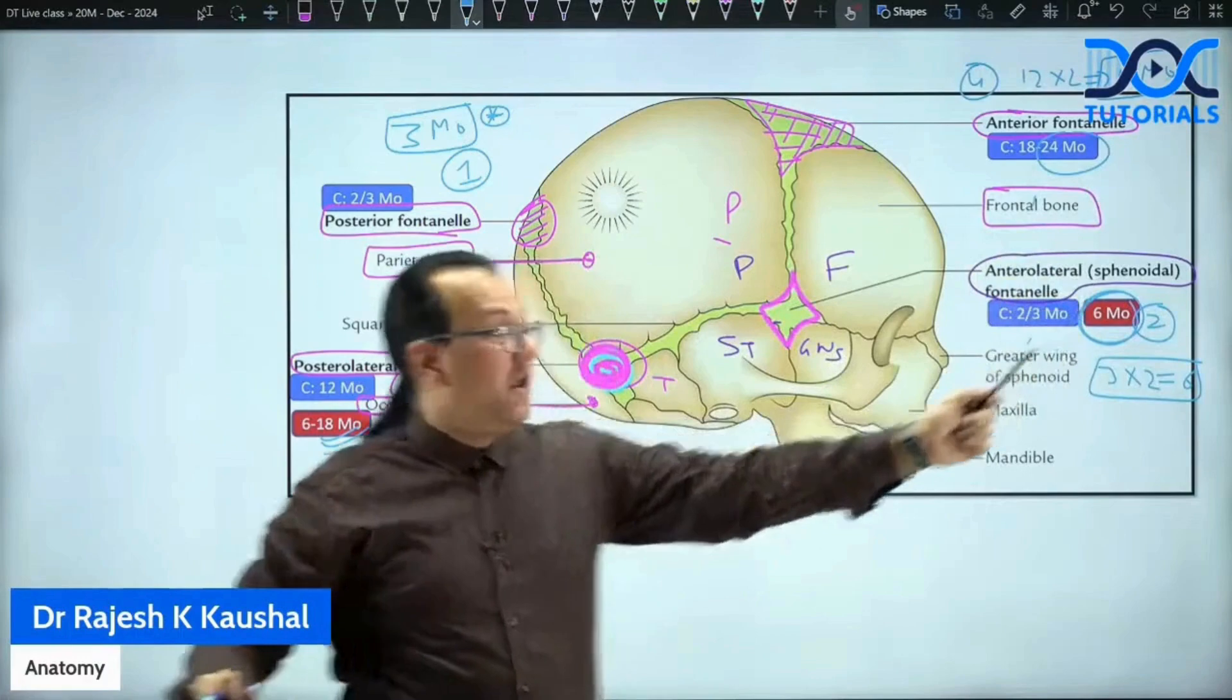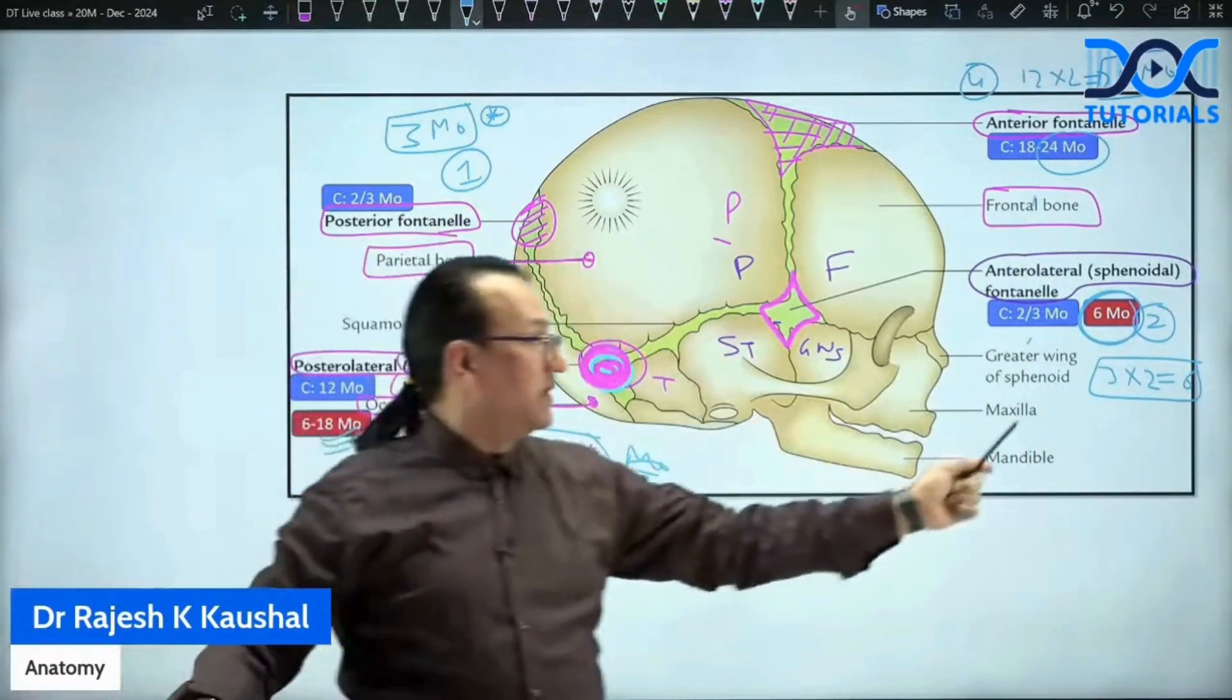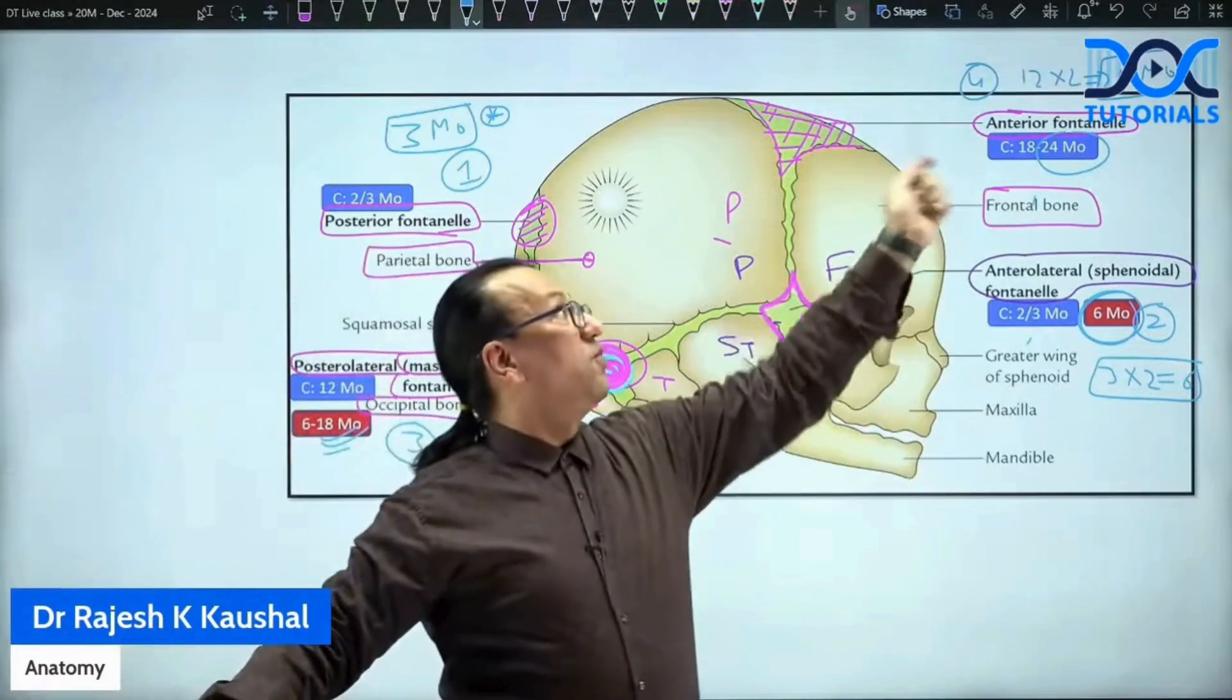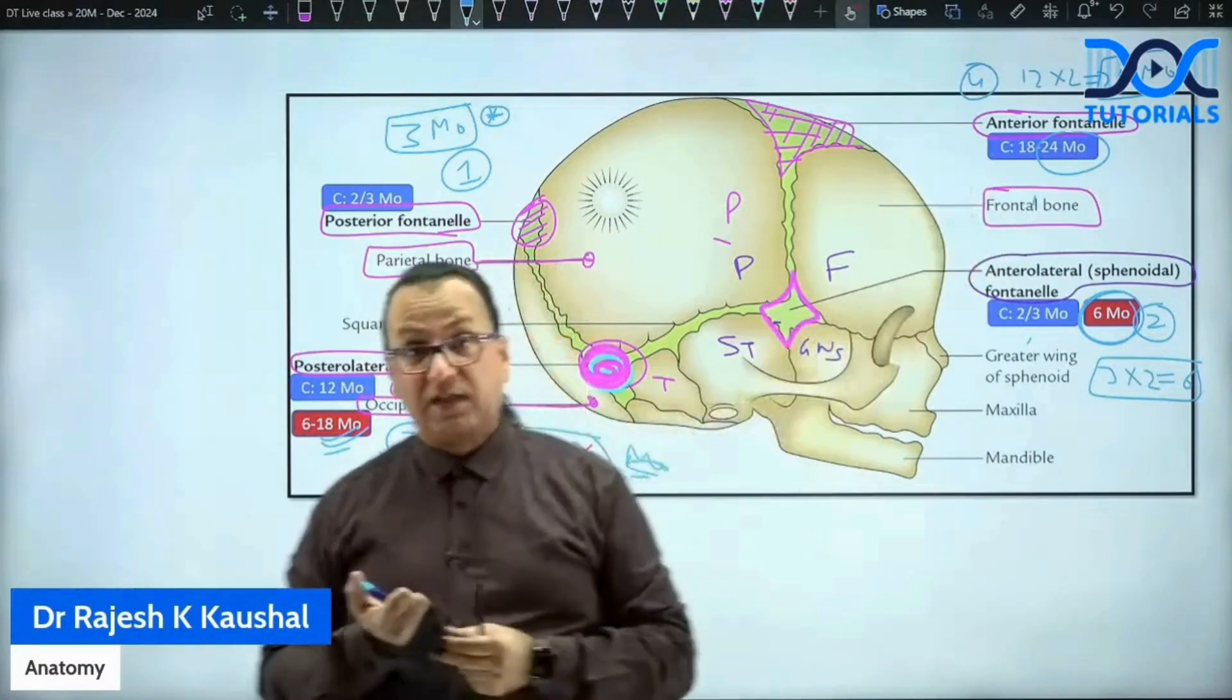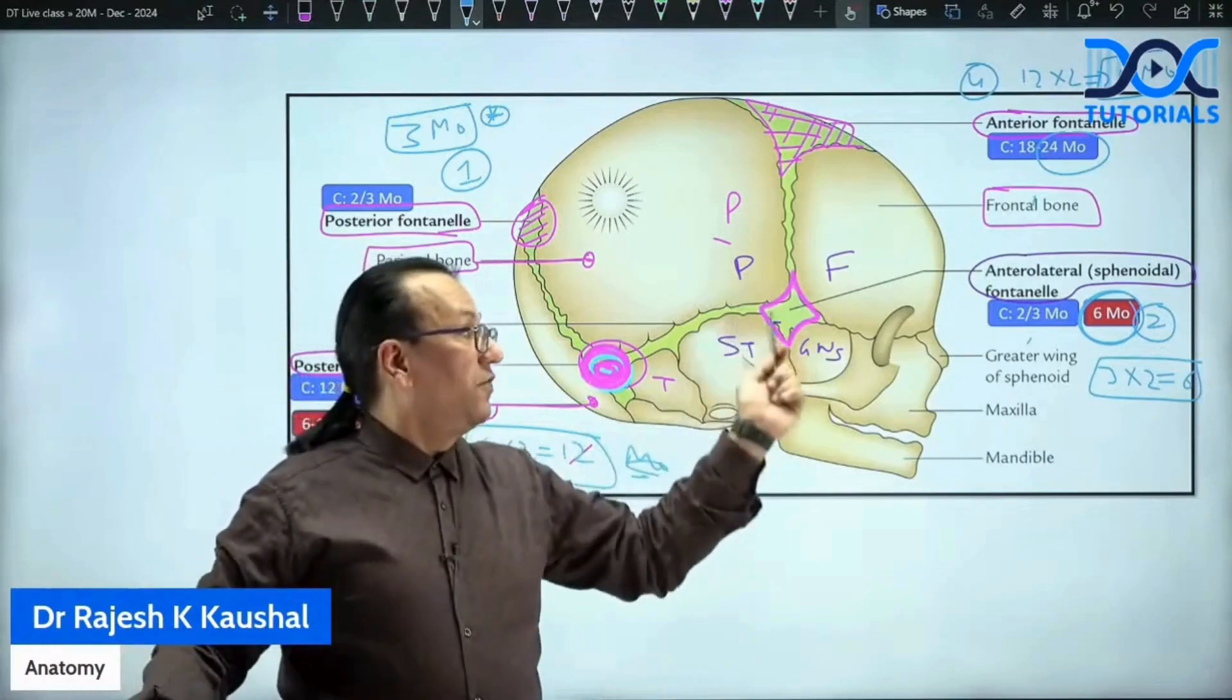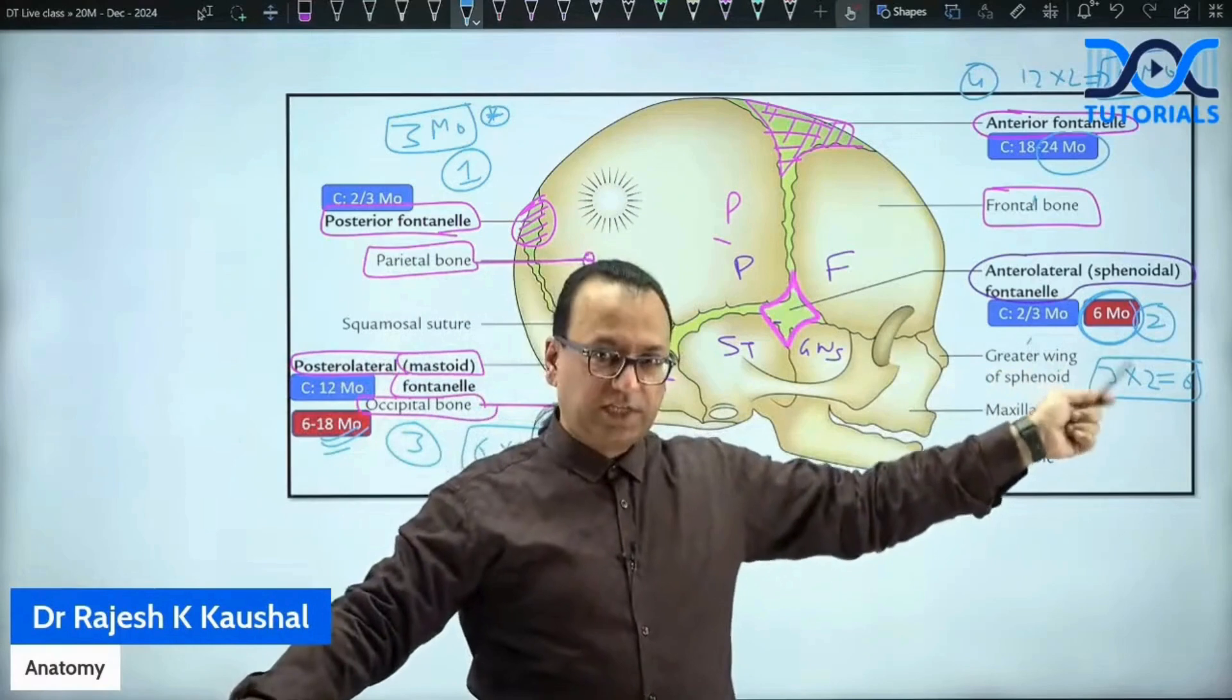I will repeat the trick, trick is, the first to close is three months, three into two, six months, six into two, twelve months, and twelve into two, twenty-four months. So that will give you one basic idea, last to close is the anterolateral fontanelle. And if you look at Gray's Anatomy, it will tell you, the anterolateral fontanelle closes by three months, but you keep it three to six months, that range.